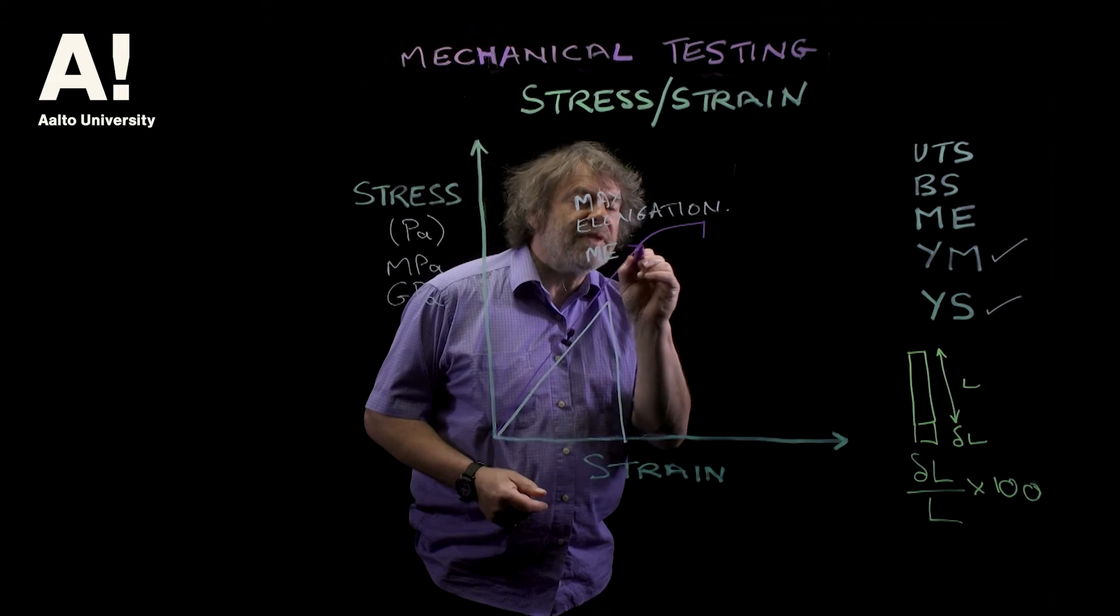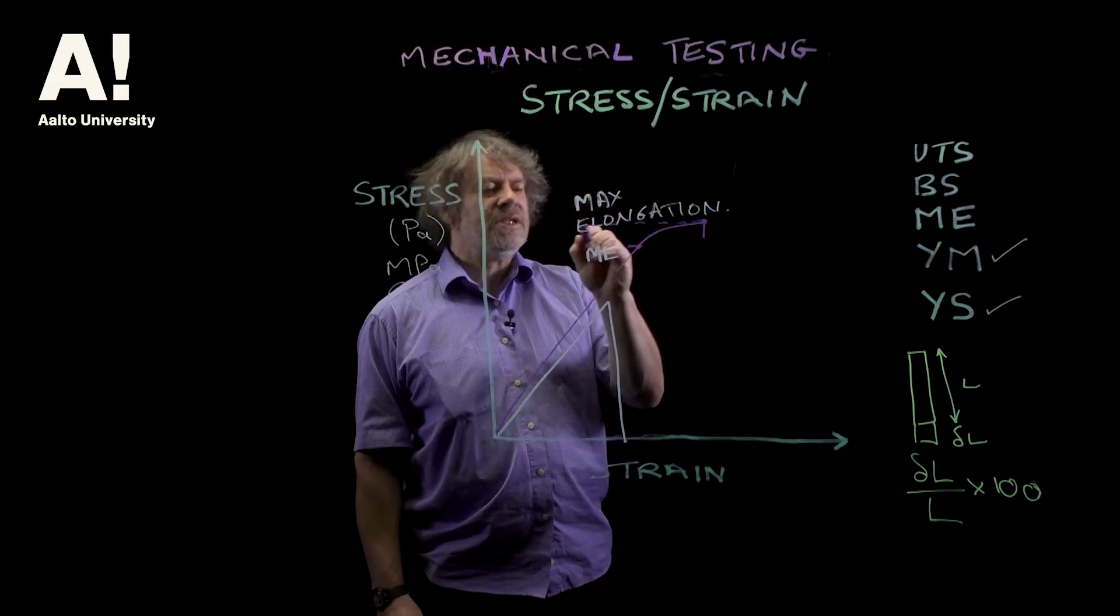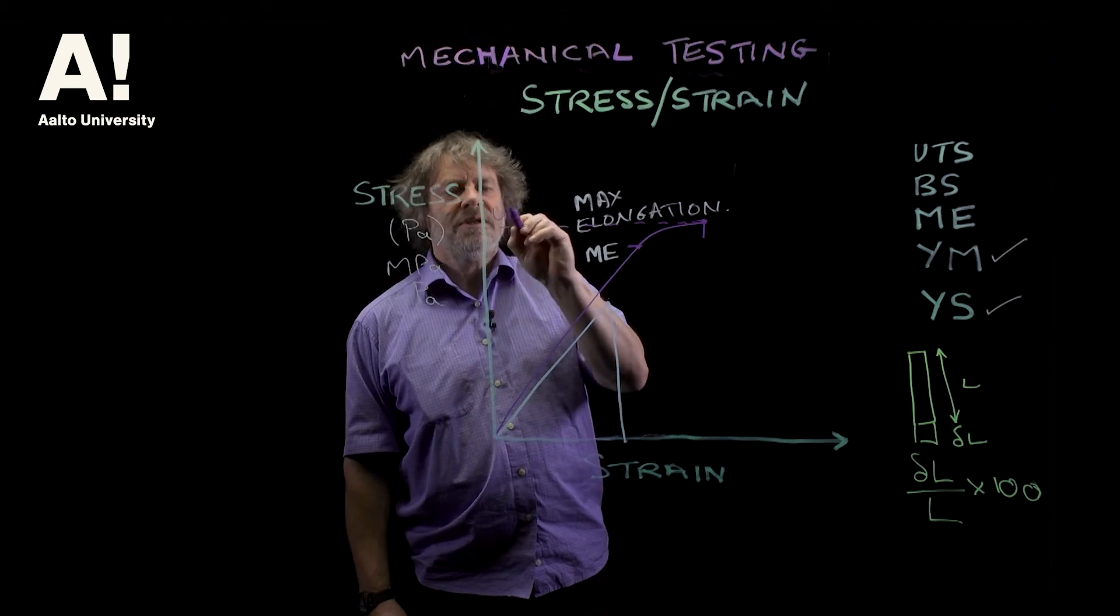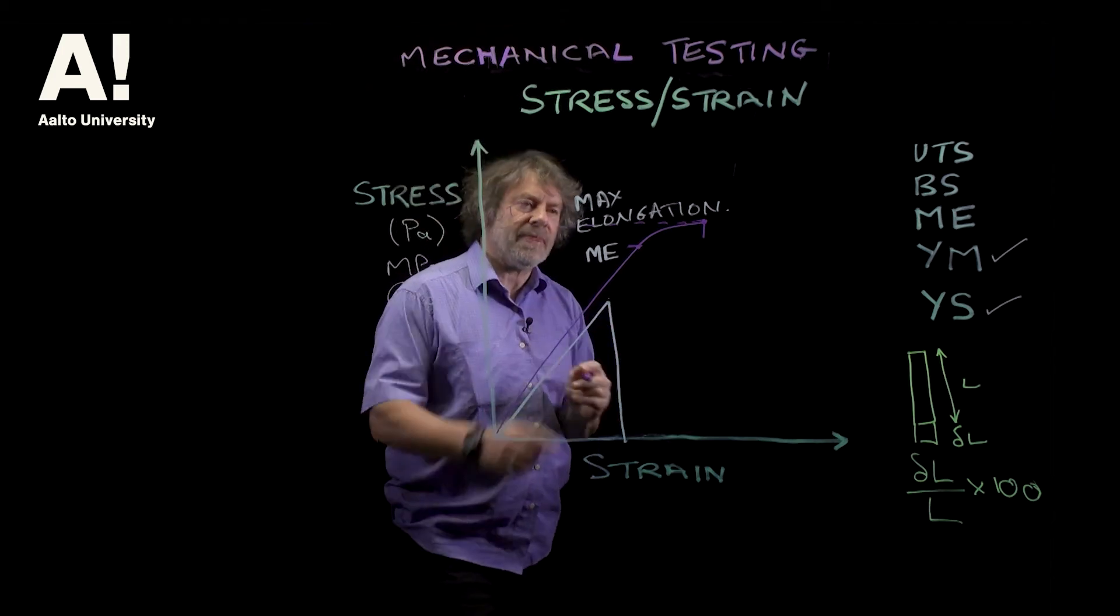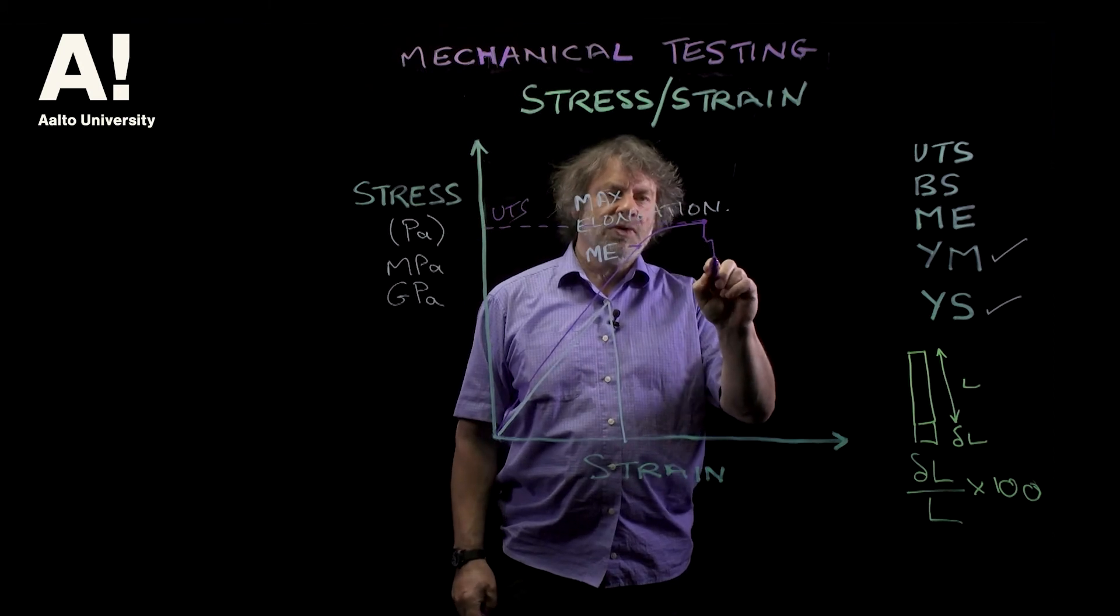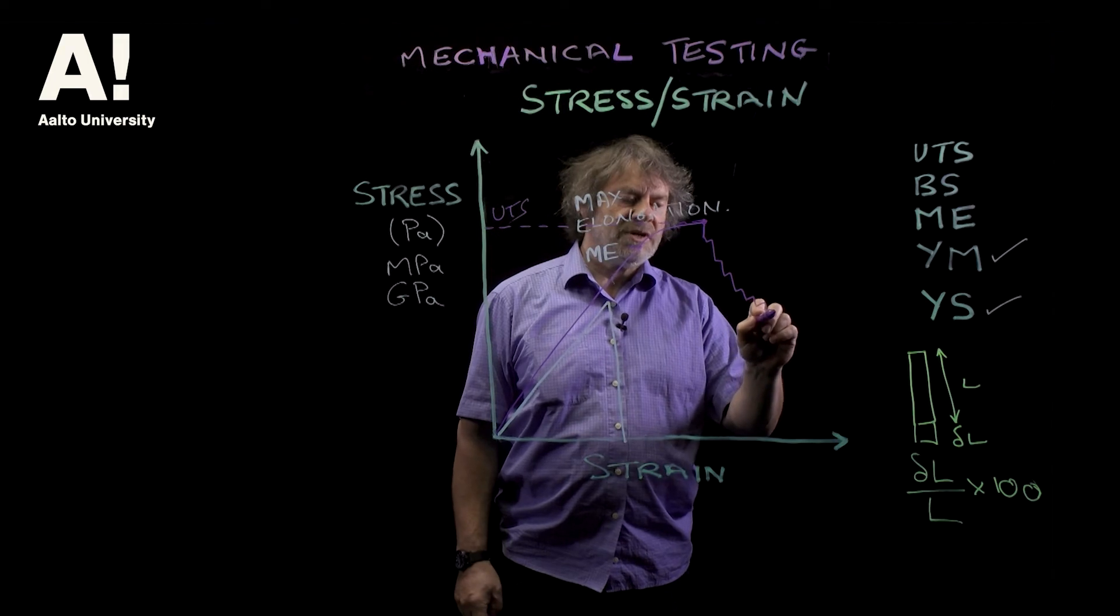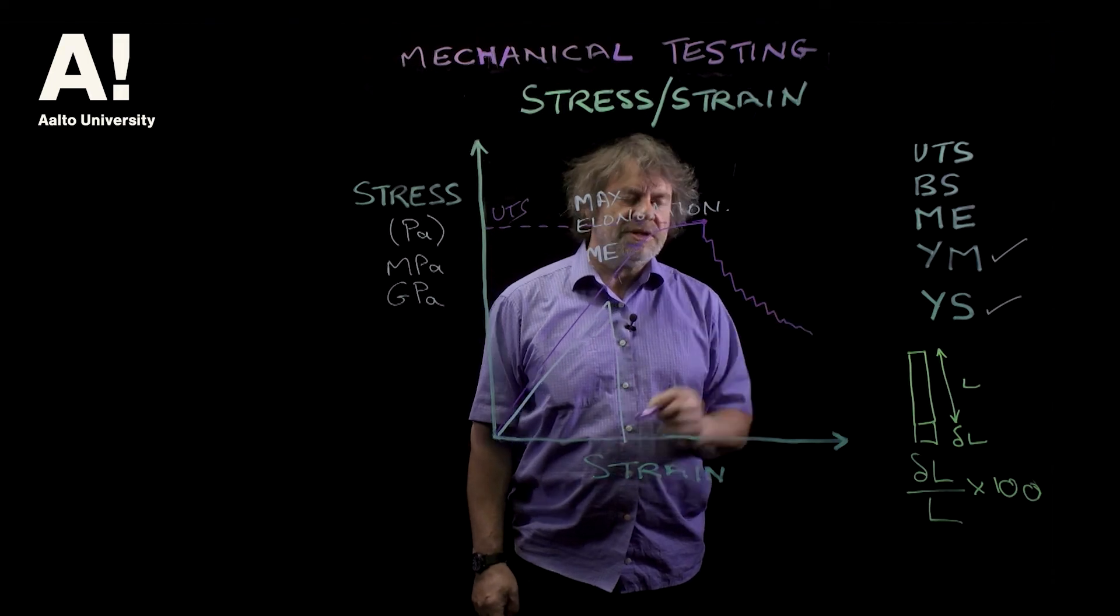So here we have the yield point, here we've reached the ultimate tensile stress, which is higher than the yield point. So it's begun to fail, but being wood, wood is a very tough material and it tends to fail something like that.